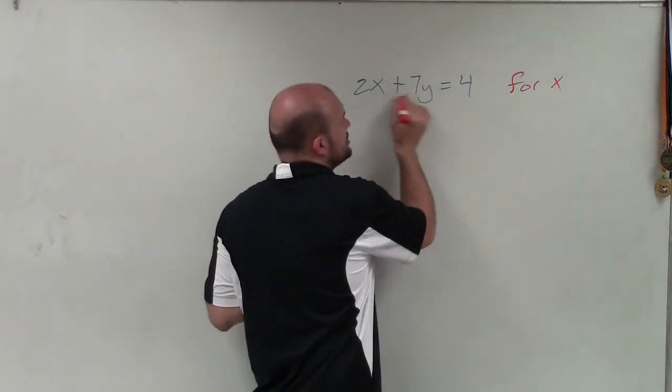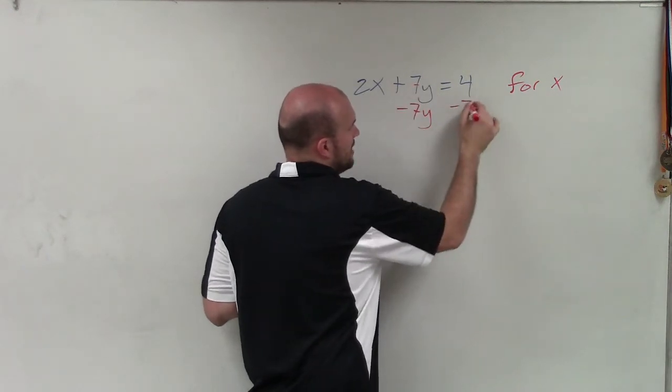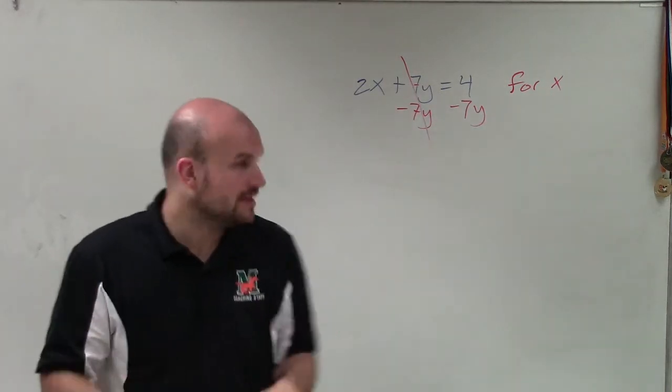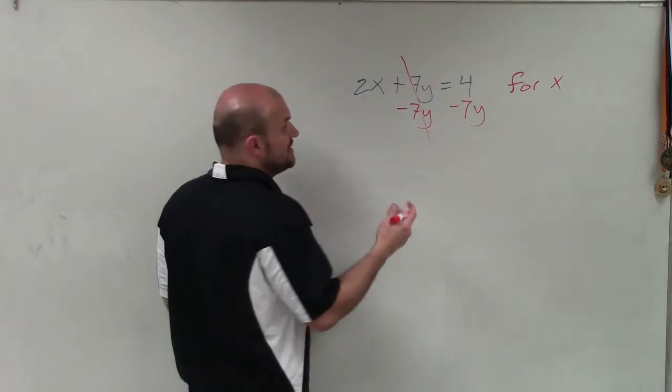So the first thing I'm going to do is undo the addition of 7y. And I'll do that by subtracting 7y on both sides, doing my subtraction property of equality, that now subtracts to 0. And then on the left side, those are not like terms, so I cannot combine them at all.